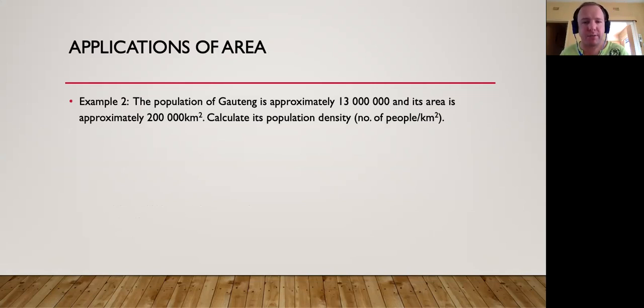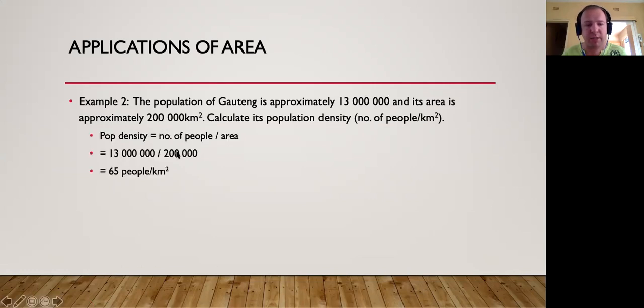For example, the population of Houghton is approximately 13 million people and its area is approximately 200,000 kilometers squared. The population density would simply be 13 million people divided by 200,000, which equals 65, which means that the population density of Houghton would be 65 people per square kilometer.